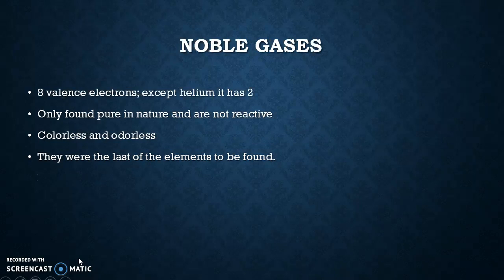Noble gases are the very last column. They are the least reactive — actually, they have no reaction at all. They're not reactive because they're happy: they have all eight valence electrons in their outer shell, which follows the octet rule. The only exception is helium — helium only has two electrons, but that's all it needs because it only has that first energy level, so it meets the octet rule even though there aren't eight. Noble gases are the only ones found pure in nature, and they're colorless and odorless — most gases are.